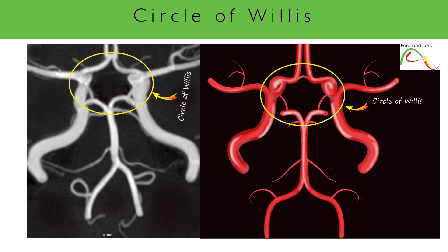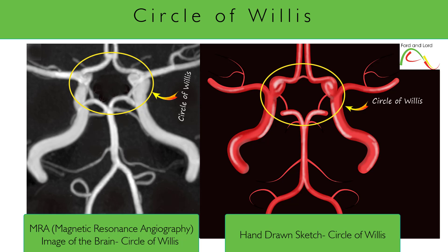The circle of Willis, or CoW for short, is a ring of arteries at the base of the skull. It is important to note that many stroke patients, patients with intracranial aneurysms, and patients with intracranial tumors need to have the circle of Willis evaluated with the help of diagnostic modalities such as DSA, MRA, or CT angiography. Therefore, it always helps to have a good understanding of the circle of Willis.